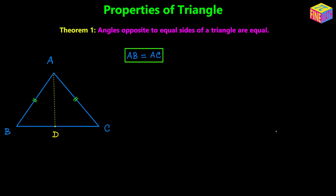Let's suppose we have the angle bisector AD, which equally divides angle A into two parts — so it bisects angle A. You can clearly see that angle BAD and angle DAC will be equal, and each of them will be half of A. If we consider the angle at vertex A as uppercase A, then angle BAD and angle CAD will both be equal to half of A.